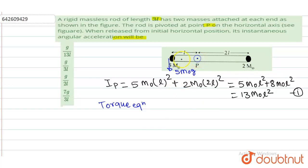So torque will be from this point. This is force into perpendicular distance. 5M₀gL. This is the force into distance L.